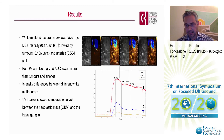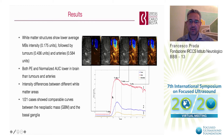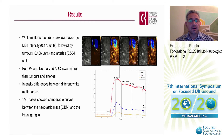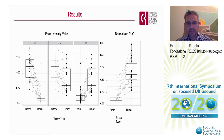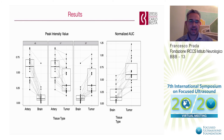We obtained time intensity curves for all cases. The artery has a higher peak compared to the tumor in blue or the brain parenchyma in yellow. These data show that differences between different structures were statistically significant across all tumors, both in terms of peak intensity value and in terms of area under the curve.